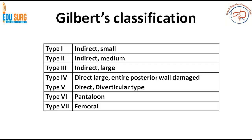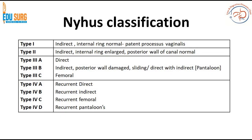Coming to named classifications: Gilbert's classification has types 1, 2, and 3 as indirect hernias (small, medium, and large), types 4 and 5 as direct, type 6 as direct plus indirect, and type 7 as femoral. The Nyhus (NIHAS) classification has types 1 and 2 as indirect, type 3 covering cases where the posterior wall is damaged (3C is femoral), and type 4 with subtypes for direct, indirect, femoral, and pantaloons hernias. Both are of academic and exam importance rather than routine clinical use.